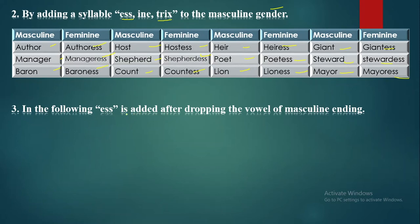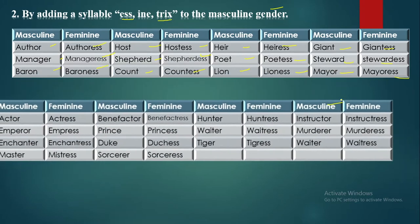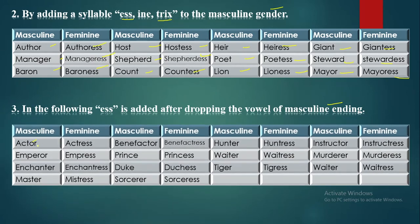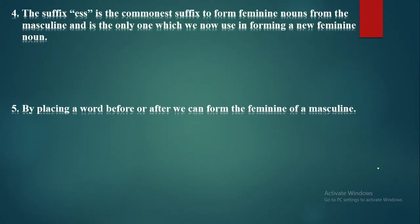The third way is when -ess is added after dropping the vowel of the masculine ending. For example, 'actor' — you remove the vowel from the ending and then add -ess to get 'actress'. Similarly: instructor/instructress, murderer/murderess, waiter/waitress. This is the third way to form the feminine.